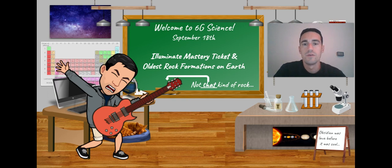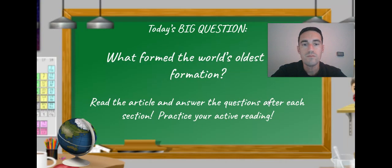Hello sixth grade, today we're going to be doing two things in class. You're going to read an article about the oldest rock formation in the world, and you're also going to be taking a pretty short mastery ticket in Illuminate. So we have two different objectives and two different goals for today.